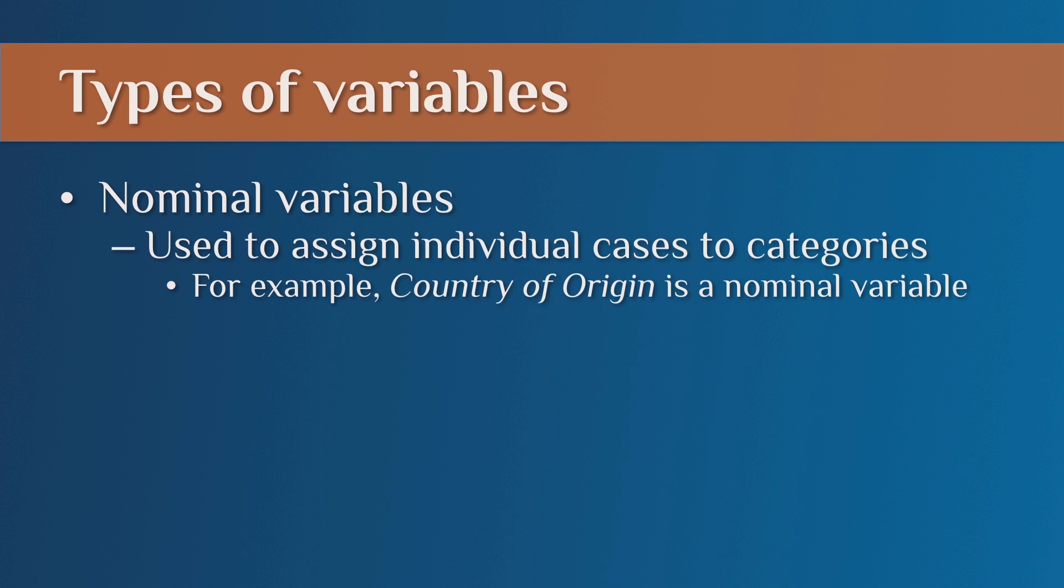Let's start with the simplest type of variable, a nominal variable. A nominal variable, and it literally means to name types of instances of variables, is to just assign individual cases to categories. So your country of origin is a nominal variable. It's just assigning individuals to categories.